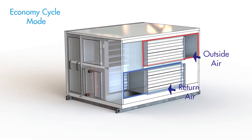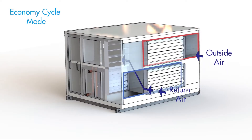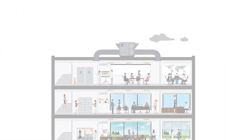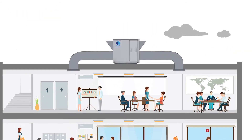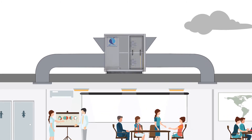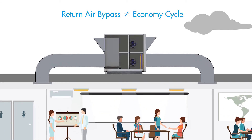In our previous video, we covered economy cycle mode for ERV and HRV units. If you haven't seen it, make sure you check it out. Return Air Bypass is another ERV or HRV unit mode that involves a form of heat exchanger bypass. Its function is quite different to economy cycle mode though, so it is important to understand the difference.